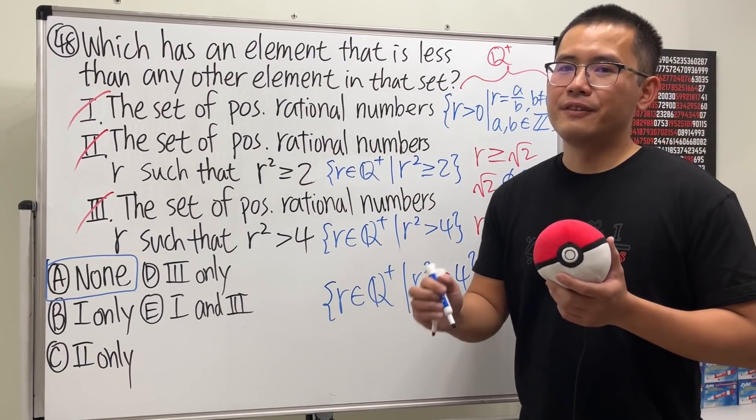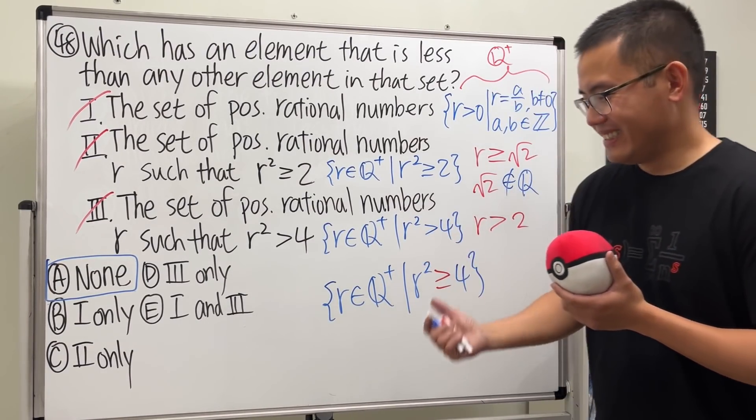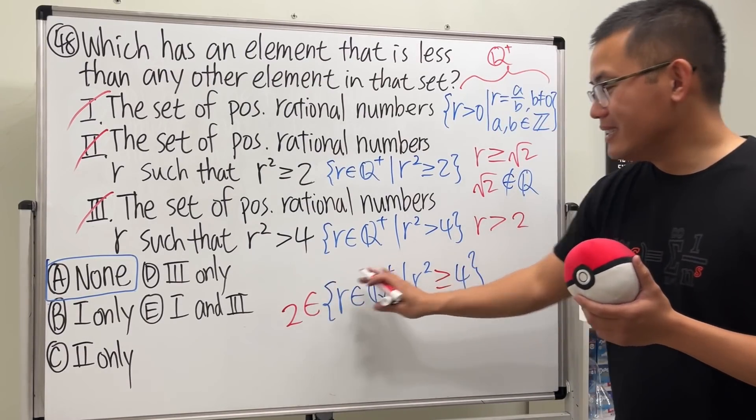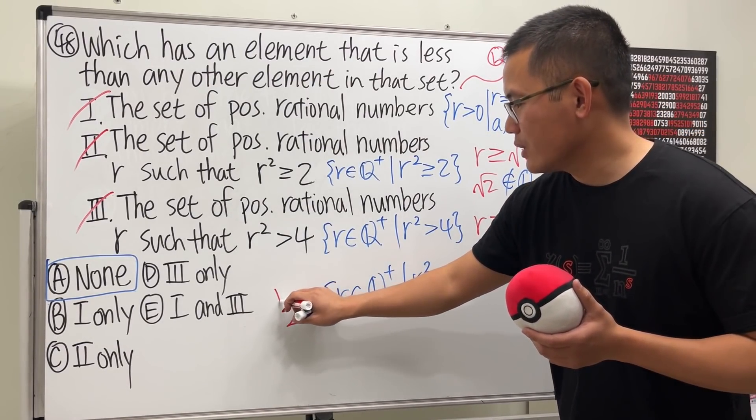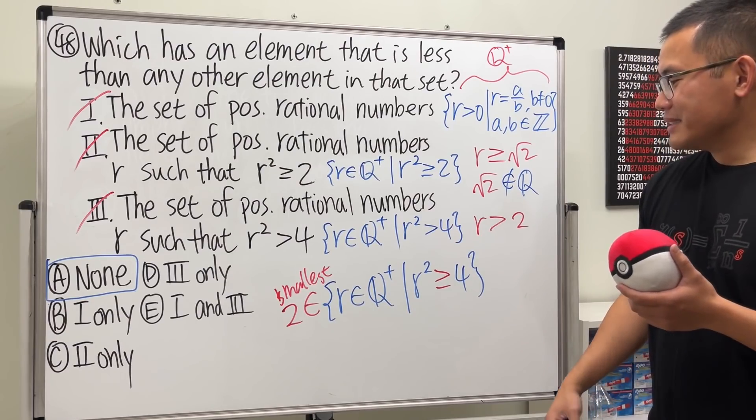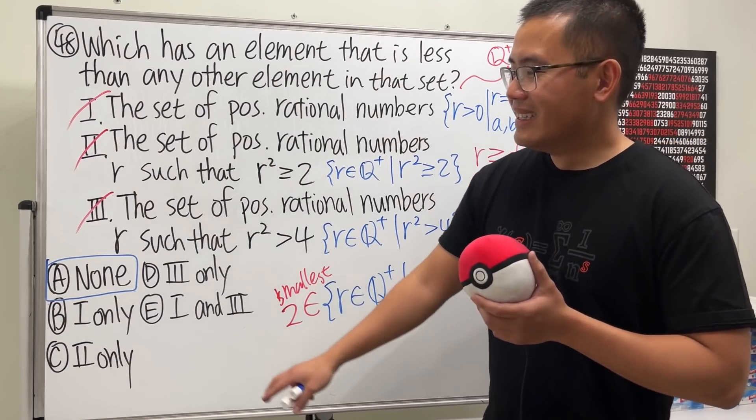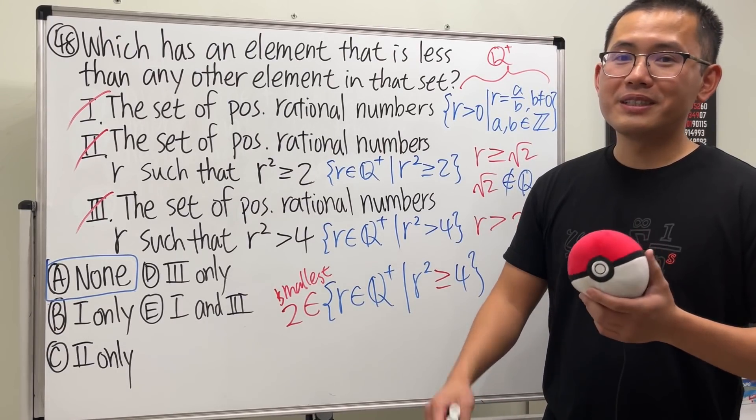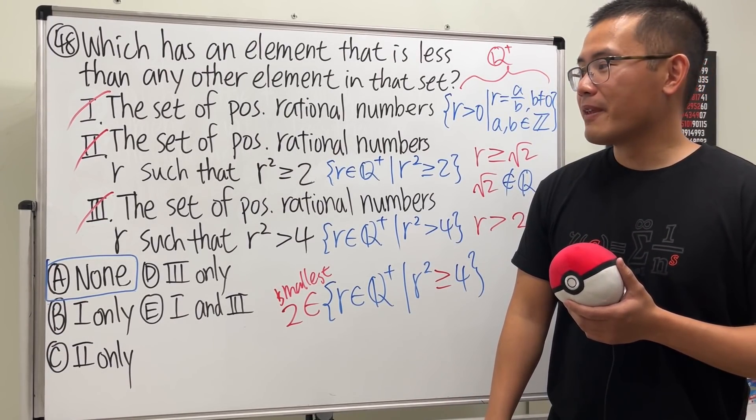If number three was saying r squared is greater than or equal to four, this right here would have a smallest element because two belongs to this set and then two, in fact, it will be the smallest. So that's why it's none of this.